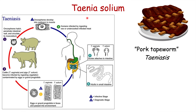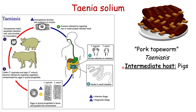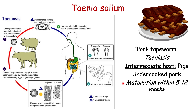Infection with Taenia solium, and also Taenia saginata, leads to the condition known as taeniasis. The intermediate host is a pig, and we get it from undercooked or uncooked pork. Maturation of this tapeworm takes about 5 to 12 weeks — so if a patient ingests infected meat containing cysticercae, it takes 5 to 12 weeks for the cysticercae to mature into an adult tapeworm.